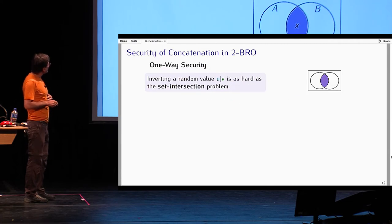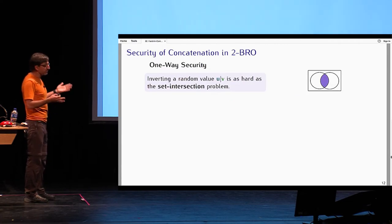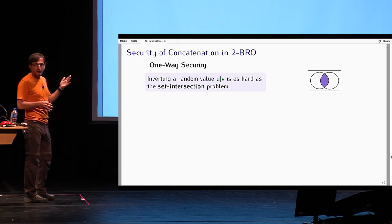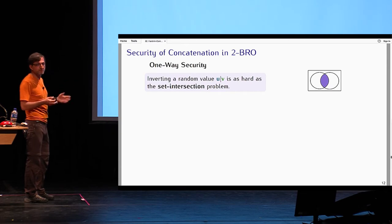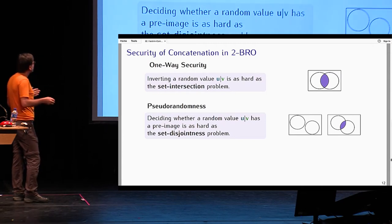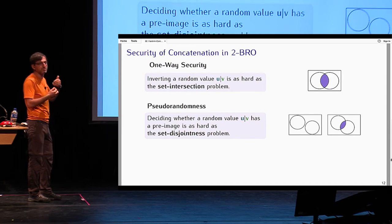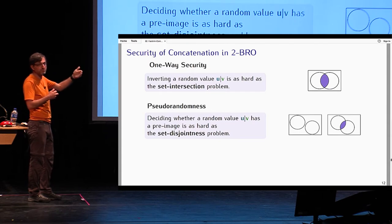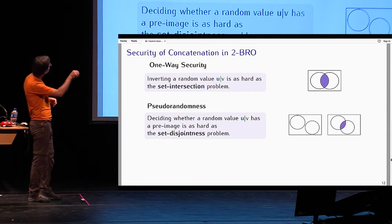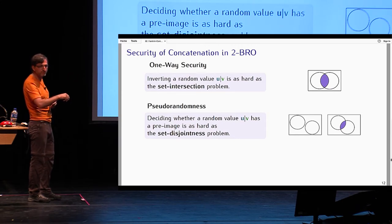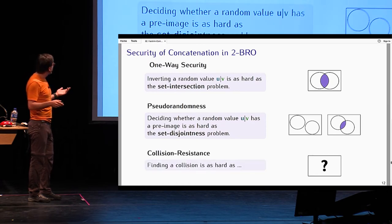To summarize, the one-wayness security of the concatenation combiner reduces to the set intersection problem. What about pseudorandomness? Actually, deciding whether a random value UV has a preimage or not, which is a problem quite close to pseudorandomness, is as hard as the set disjointness problem. Because you're deciding to see if something is in the preimage, is in the image of the PRG or not. This is quite natural because this is a search problem, goes to a search problem in communication complexity. This is a decision problem, goes to a decision problem in communication complexity.